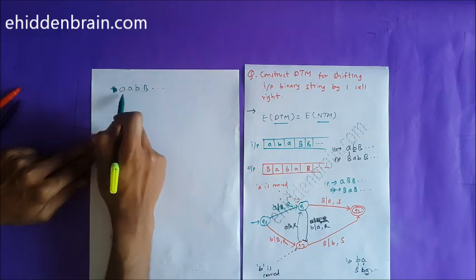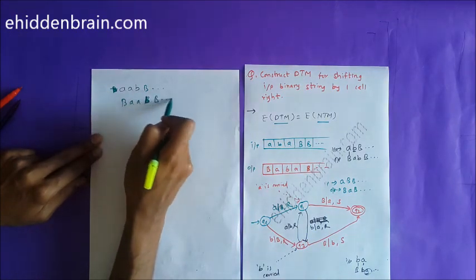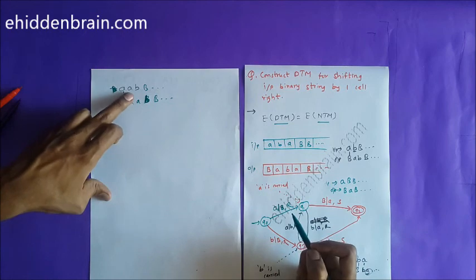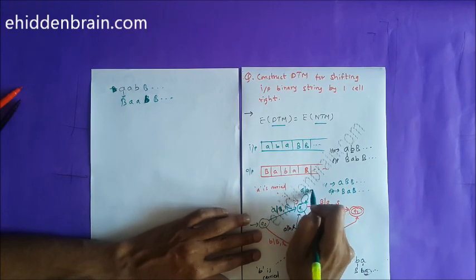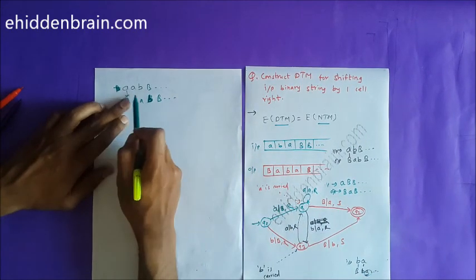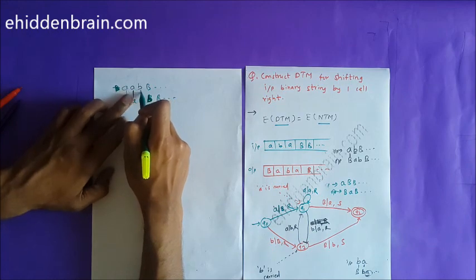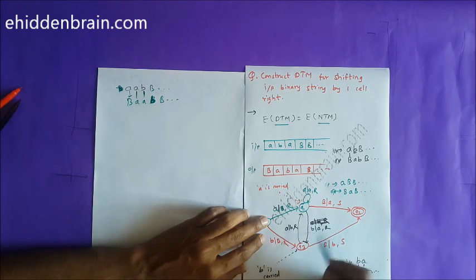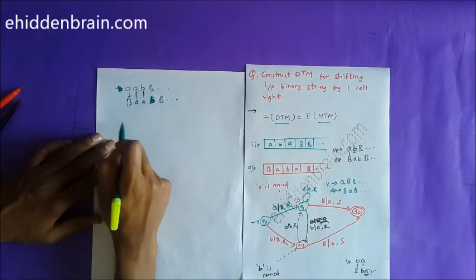For input 'aab', the tape contains 'a', 'a', 'b', then blanks. The output should be blank (B), 'a', 'a', 'b'. The first 'a' is replaced by blank (B) and we go to q1 carrying 'a'. On q1, the next 'a' is replaced by the carried 'a' and we stay on q1. Then 'b' is replaced by the carried 'a', moving to q3. Finally, blank (B) is replaced by small 'b' and we halt at q2.